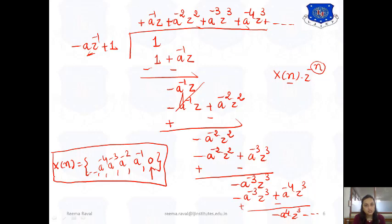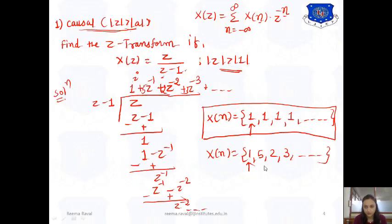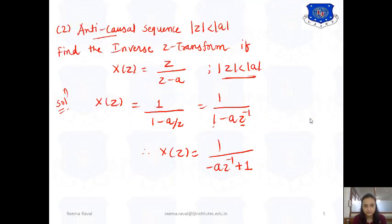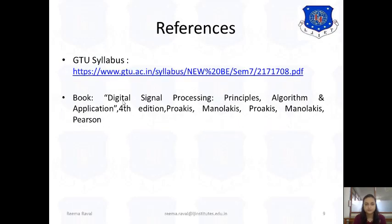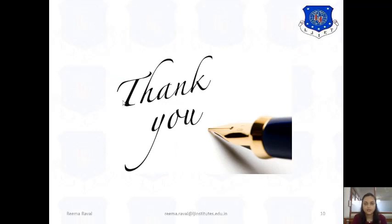To summarize: for the causal sequence, the long division produces a right-hand-side sequence extending in the positive direction, while for the anti-causal sequence, it produces a left-hand-side sequence in the negative direction. This is the power series method — also called the long division or direct division method — for finding the inverse Z-transform. In exams, use whichever method is specified. The partial fraction method is the more important of the two. Practice these examples — I hope this is clear. Thank you for listening.